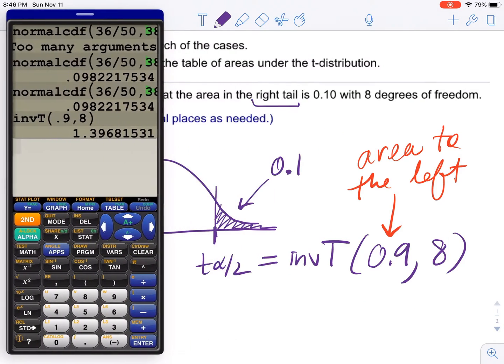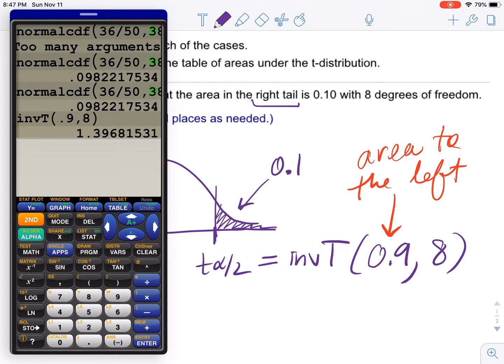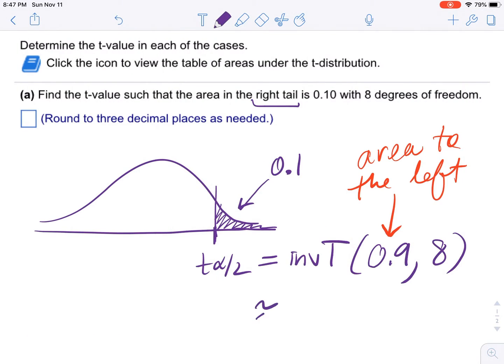in this case a t-score. So if we look at that, we have inverse t of 0.9 comma 8, so it's 1.397. We're supposed to round to three decimals, so that would be the answer, and that's it.